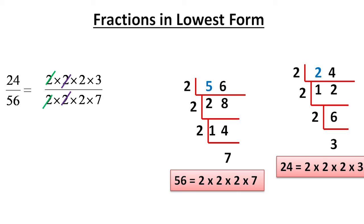Third 2 and 2 we can also cancel. The remaining are 3 and 7, 3 in numerator and 7 in denominator. So 3 by 7 is the lowest form or simplest form of 24 by 56.